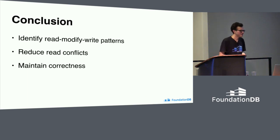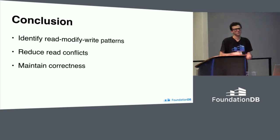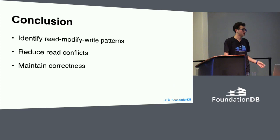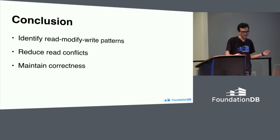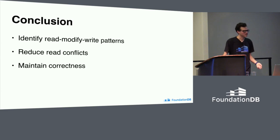In conclusion, there are a few strategies to employ when analyzing your data model. First, look at your read-modify-write patterns and see if any can be replaced with atomic operations. Second, be mindful of your read conflicts — think about which ones you don't really need and can remove. Third, be careful when being clever with conflict ranges that you're not accidentally removing something you actually depend on and destroying the correctness of your system. It's a balancing act, but necessary to get good throughput and latency with FDB. Thank you very much, and happy data modeling.